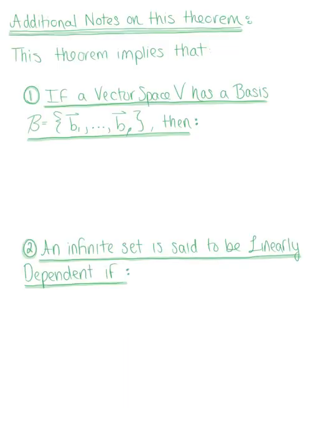A couple of additional notes on this theorem: it additionally implies that if a vector space V has a basis defined by the set of vectors b_1 through b_n, then each linearly independent set in the vector space has no more than n vectors.